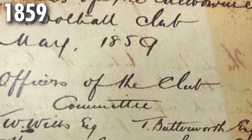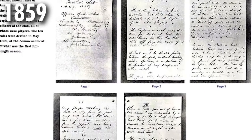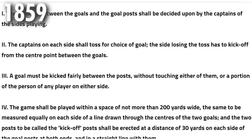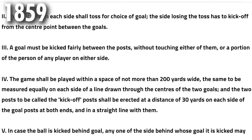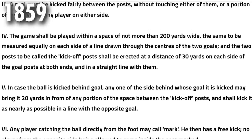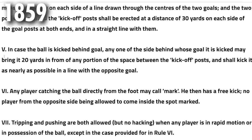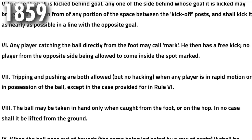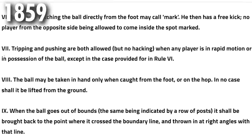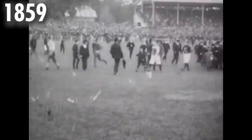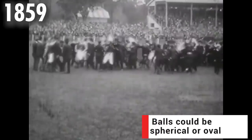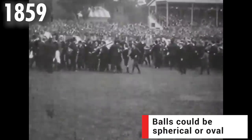In May of 1859 the first 10 laws were written for the game of Australian rules football. Some of the significant rules included confirmation of ground dimensions; a goal would be awarded if the ball travelled through the post without touching a teammate or opponent; a player catching the ball from a kick would be awarded a mark and take a free kick; the ball could not be lifted from the ground; and teams now consisted of just 20 players, though games still only ended once a team first scored two goals.